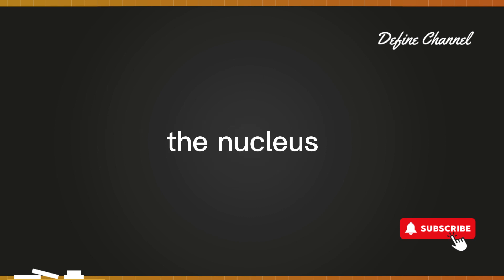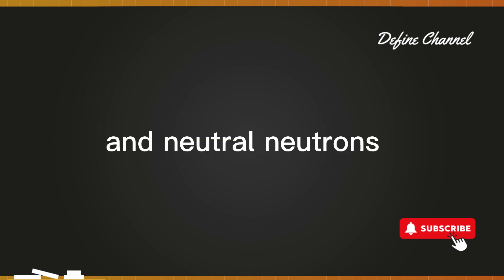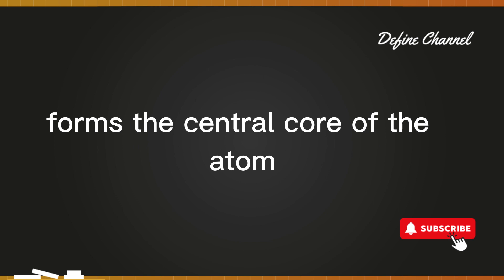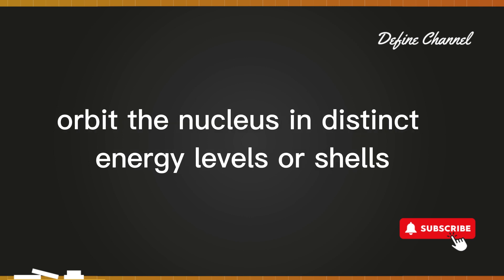The nucleus, composed of positively charged protons and neutral neutrons, forms the central core of the atom. Electrons, which carry a negative charge, orbit the nucleus in distinct energy levels or shells.